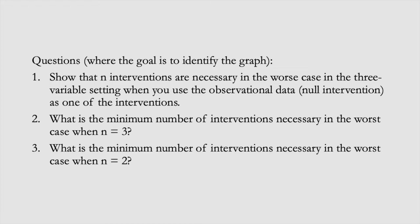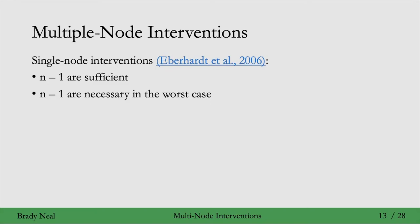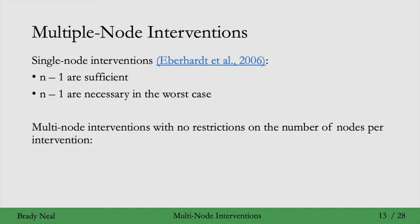We just saw what we need when we have single variable interventions, and now we'll move on to when we are allowed to intervene on multiple variables at once. When we only intervene on one variable at a time, we need n-1 interventions in the worst case, and n-1 interventions are sufficient to identify the causal graph.